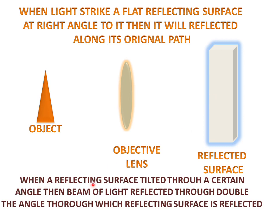When a reflecting surface is tilted, means this reflecting surface, if we tilt it through a certain angle, then beam of light reflected through double the angle through which reflecting surface is reflected.